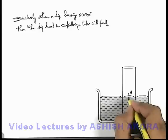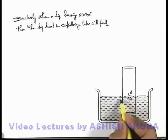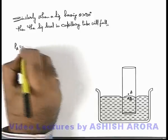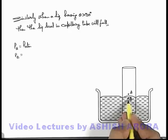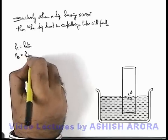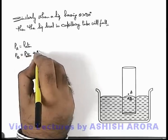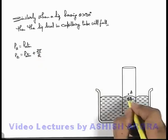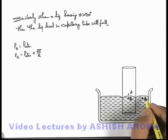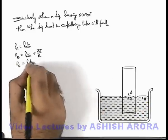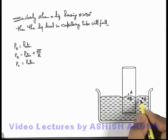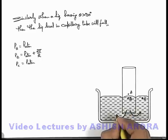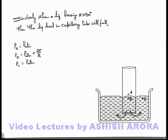Taking points A and B just above and below the convex meniscus: pressure at A is P_atm since it is in contact with atmospheric air. At point B, which is on the concave side of the meniscus (below, inside the liquid), pressure is more than at A, with excess pressure 2T/R, so pressure at B = P_atm + 2T/R. Taking point C at the same level in the surrounding liquid, pressure at C = P_atm since that layer is flat. Since pressure at B is greater than at C, liquid will start coming out of the capillary, and the liquid level inside will fall.